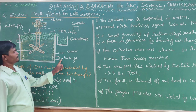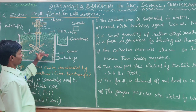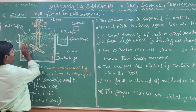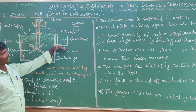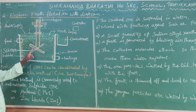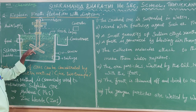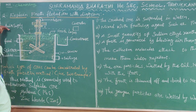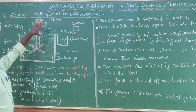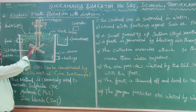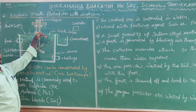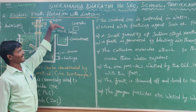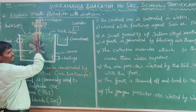The tailings will collect the gangue particles. You can add oil, water, ores, and particles. You can add the air supply. The air supply creates a froth layer.